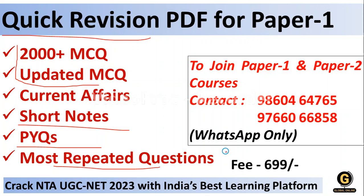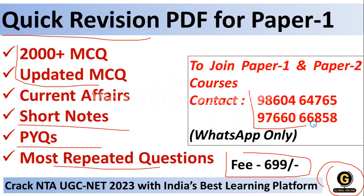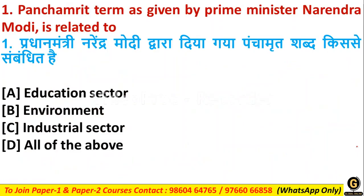It is a one-time payment. You can download the Global Online app from the Play Store or contact the numbers provided. Global Online is also providing Paper Two material — contact the same numbers or download the Global Online app from the Play Store.